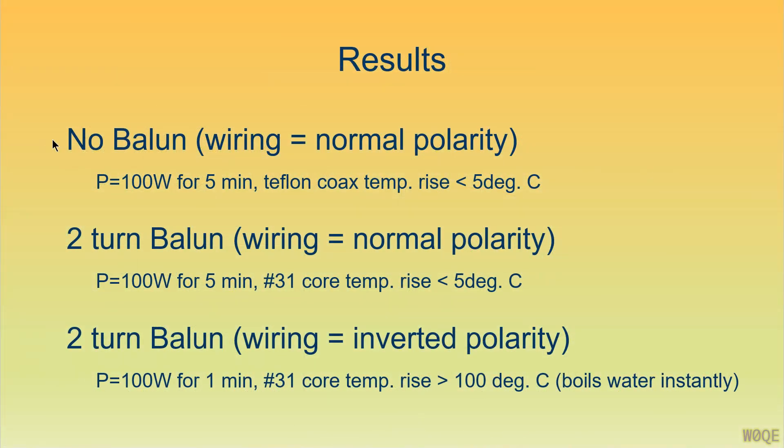The first test I did was with no balun in the circuit at all. I wired the small diameter coax directly to the resistor with the polarity of the wiring being normal, where the shield of the coax matched the chassis connection on the dummy load. And I put 100 watts in the transmitter for five minutes, continuous power, and the temperature rise of the transmission line, the small coax was less than five degrees Celsius.